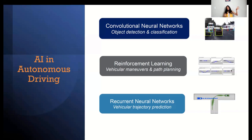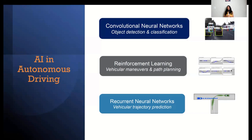So these are the three sections: convolutional neural networks run independently with no time component, working great for multi-class classification and multi-object identification in images. Reinforcement learning is for strategic decisions, making policies, making timestamp-based recurring policies. Recurrent neural networks are time-based artificial neural networks with recall memory, used to understand vehicular trajectory.